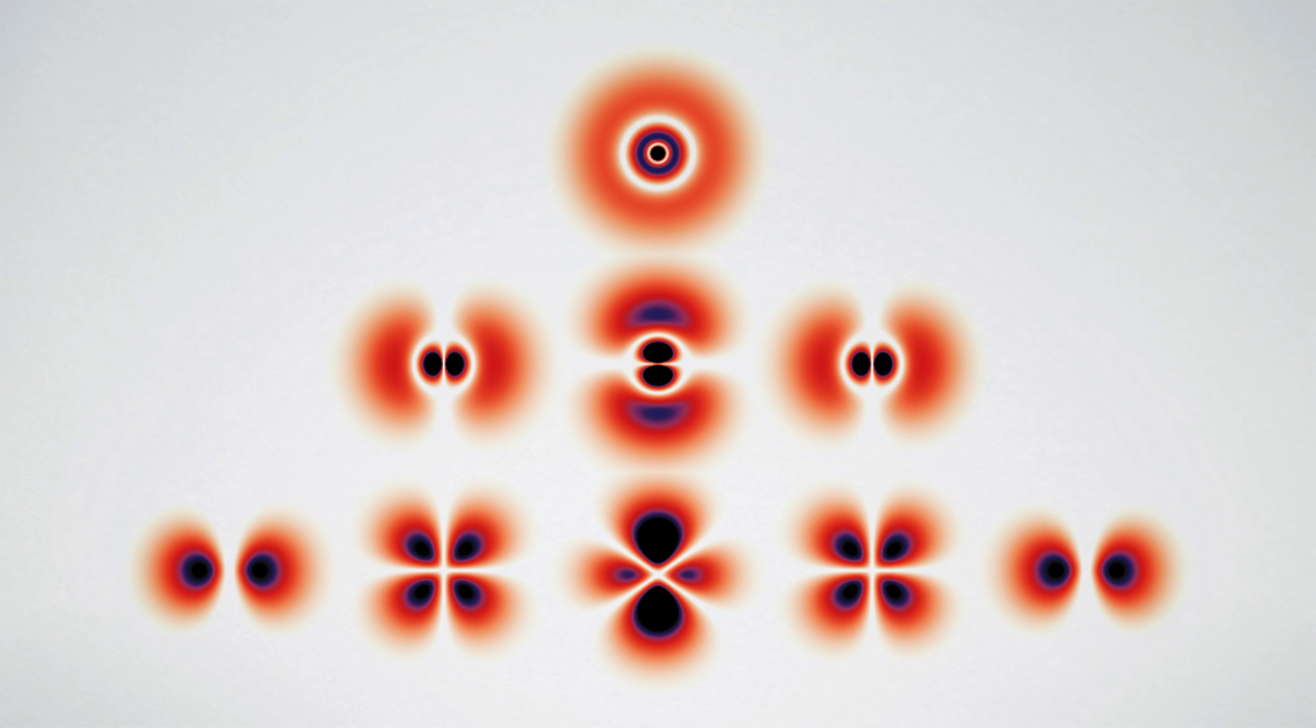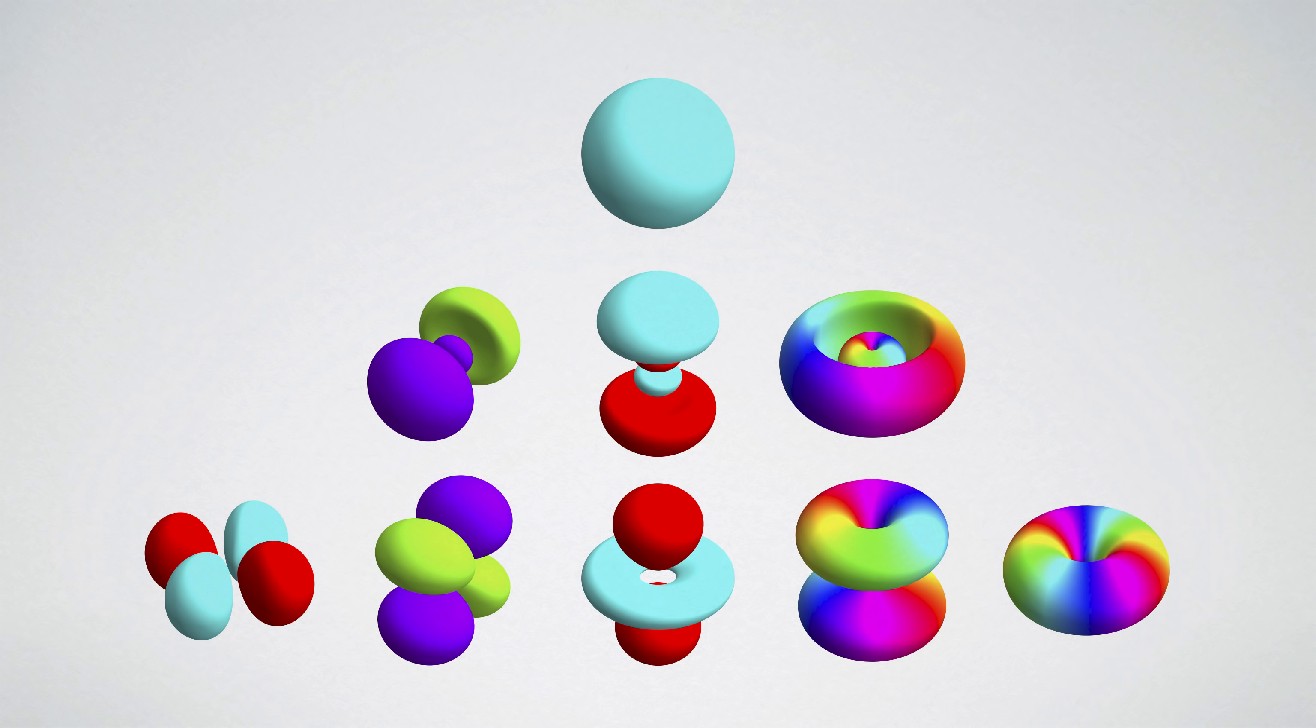On the other hand, you have atomic orbitals depicted as fuzzy clouds or balloons or rainbow doughnuts, which are definitely more technically accurate or technically inspired, but none of which feel like they give me a sense of what's actually going on.